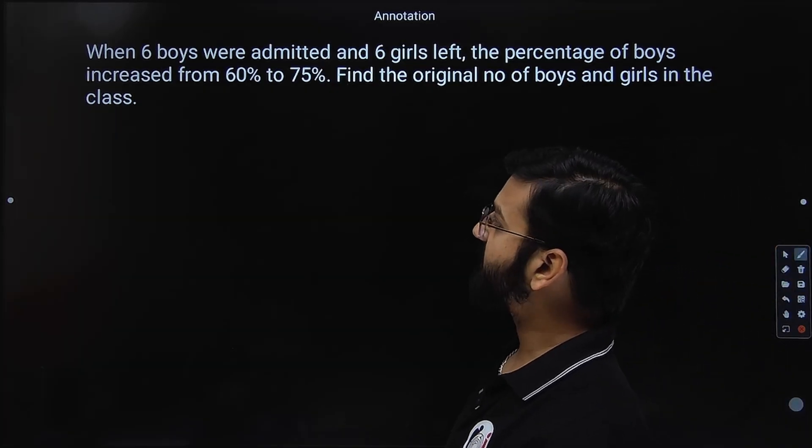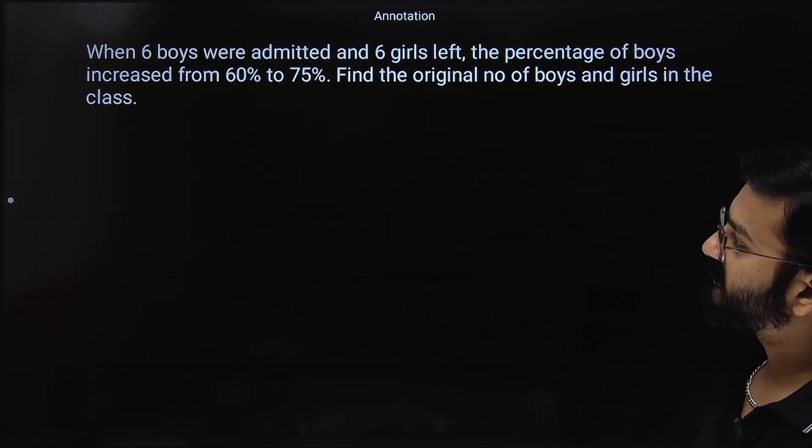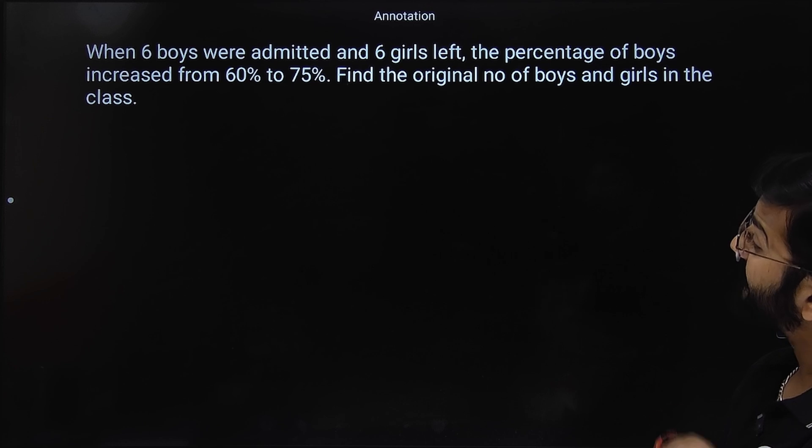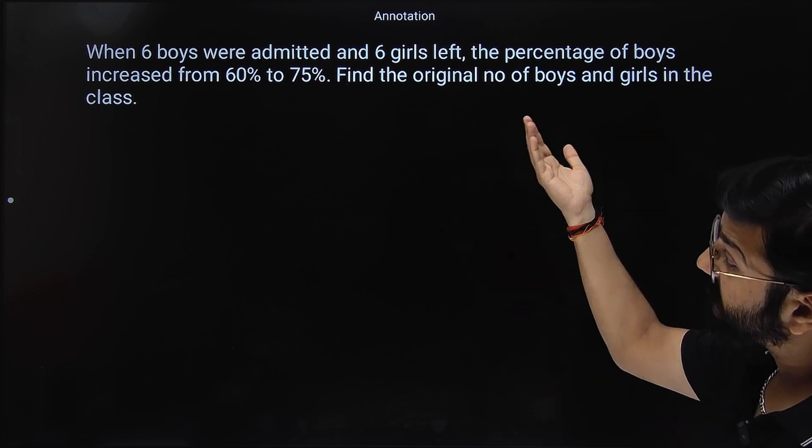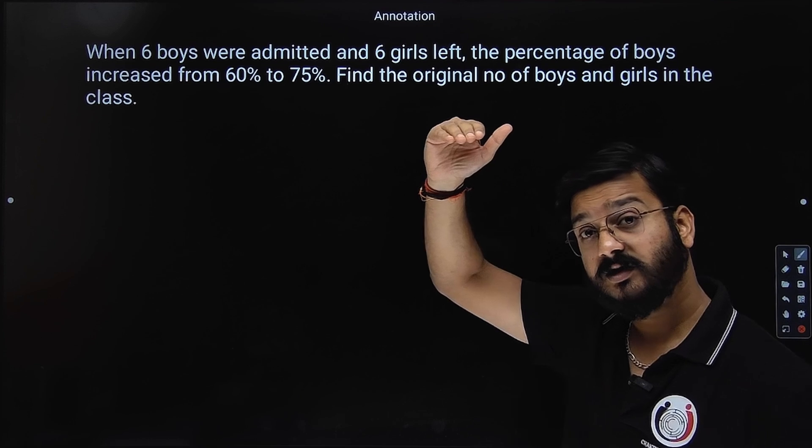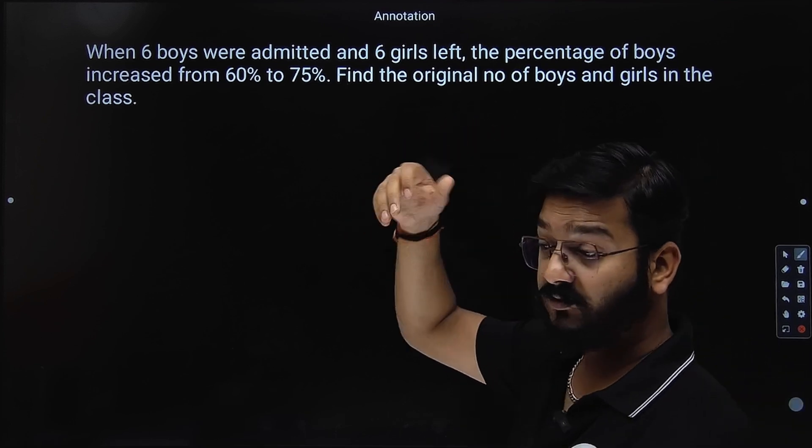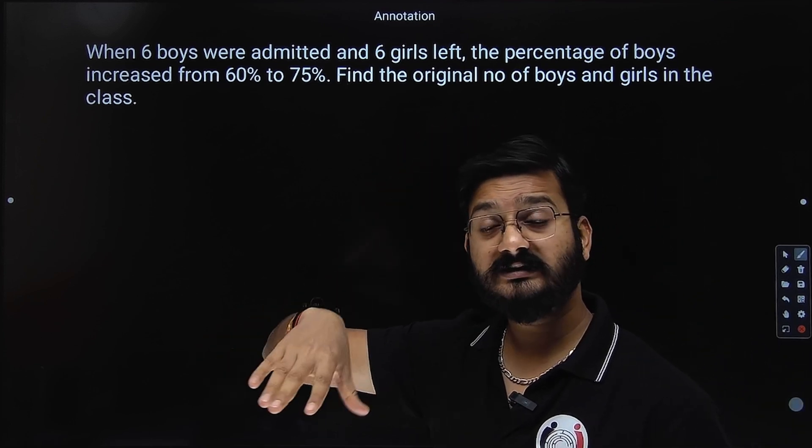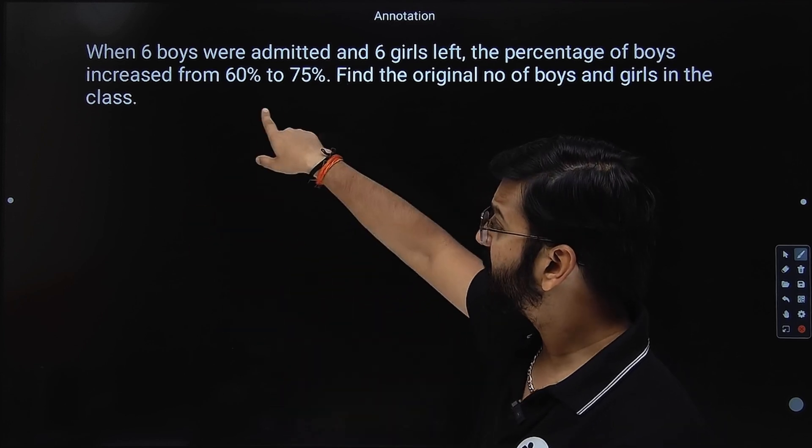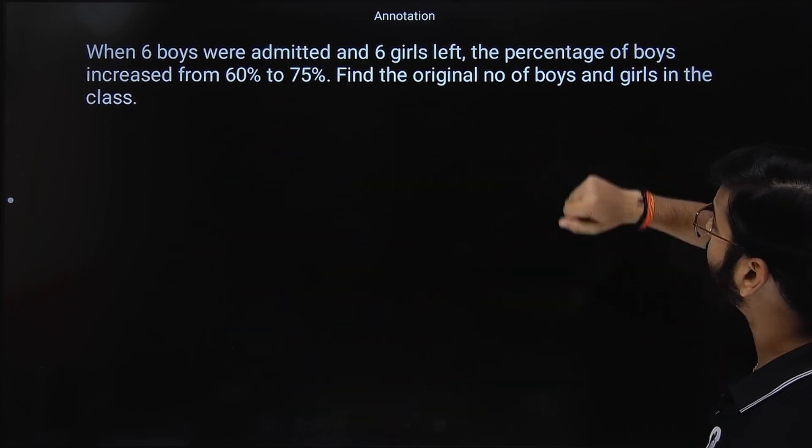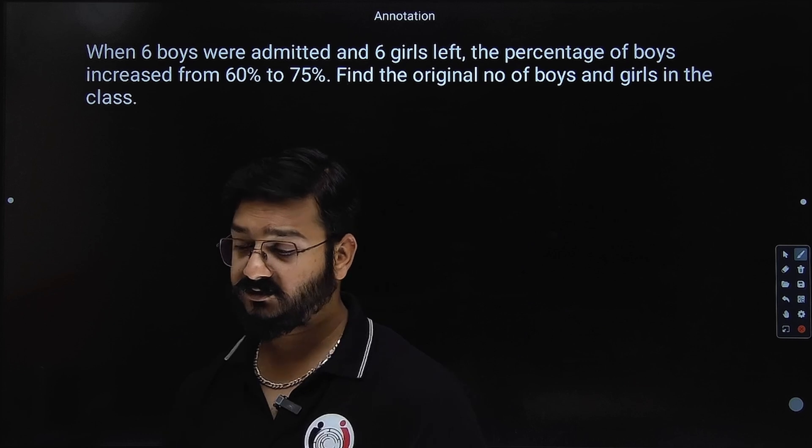Okay students, let's take the last question. The question says when 6 boys were admitted and 6 girls left, the percentage of boys increased from 60% to 75%. So 6 boys took admission in a particular class and 6 girls left. Obviously, the percentage of boys will increase. It is increasing from 60 to 75%. Find the original number of boys and girls in the class. So let us assume that.